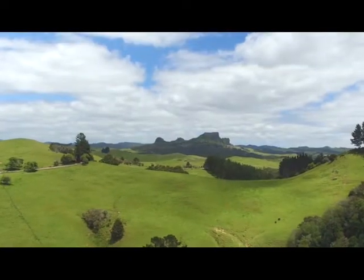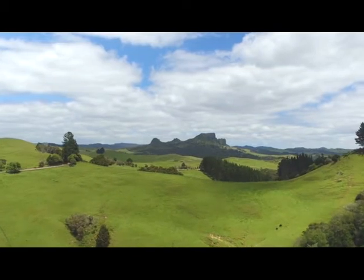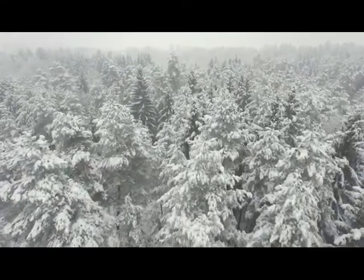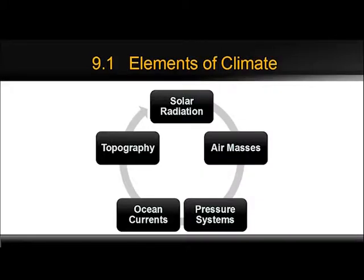Geographers recognize a number of factors that affect a region's climate: latitude, elevation, proximity to large water bodies, mountains and other surface features, ocean circulation patterns, and long-term atmospheric circulation. Together, these factors control the range of temperatures and the amount of rain and/or snow each region receives through the year.